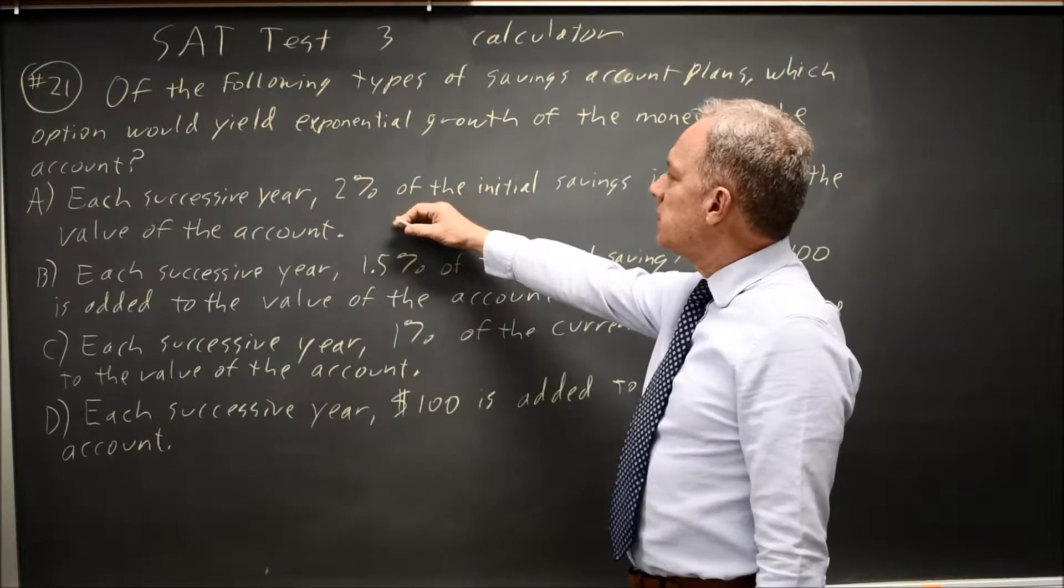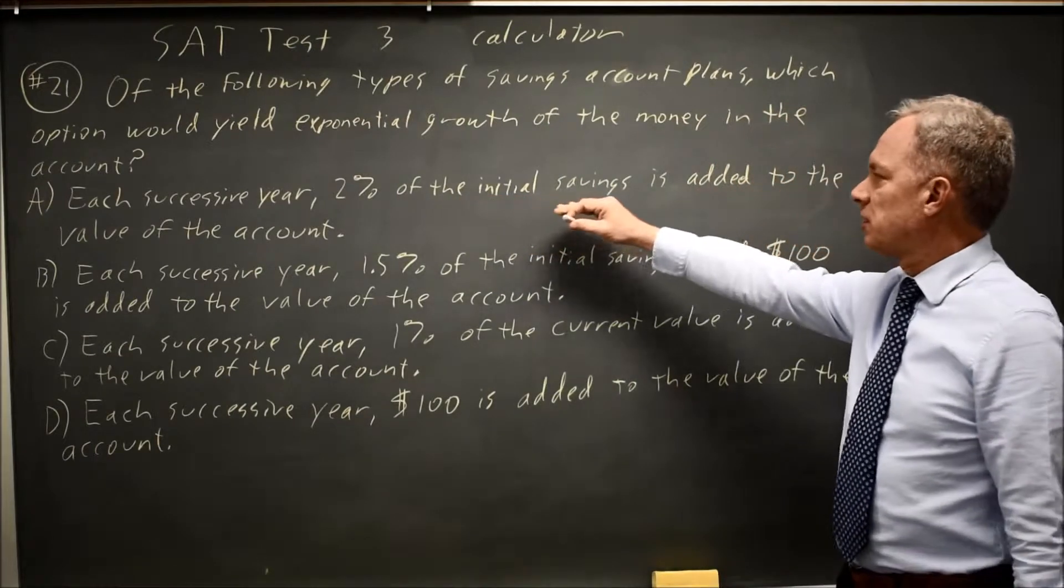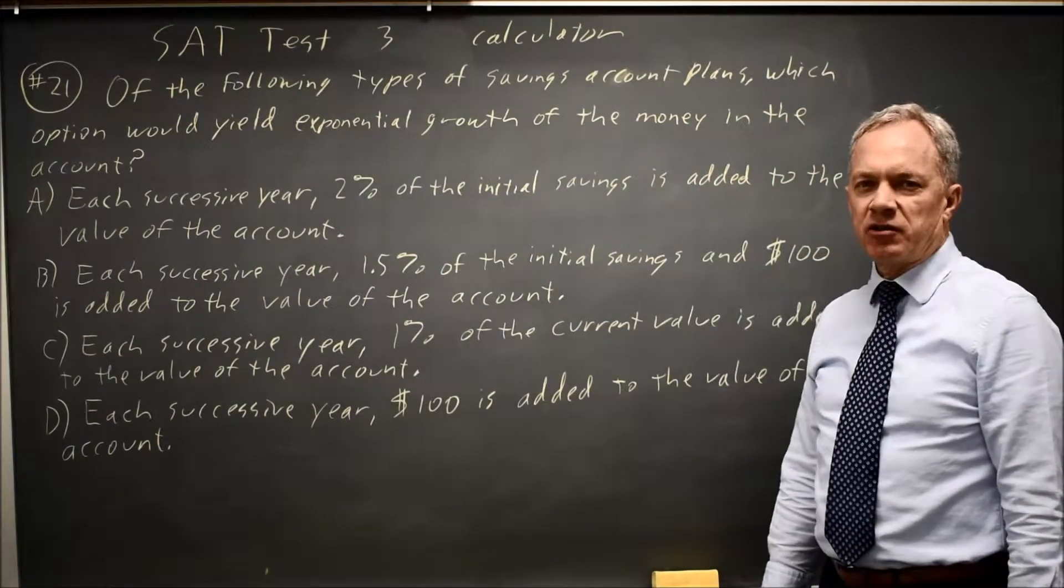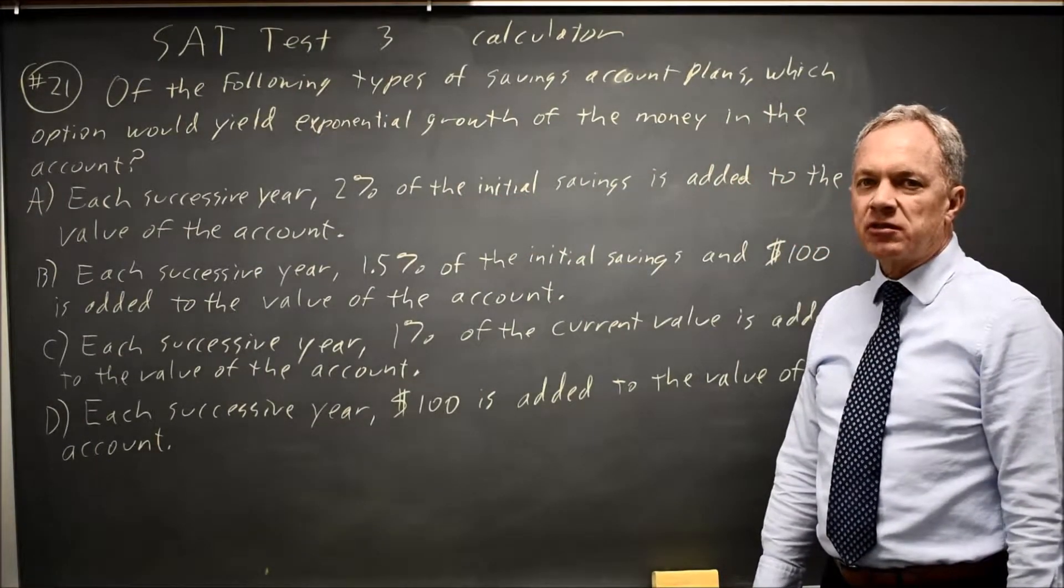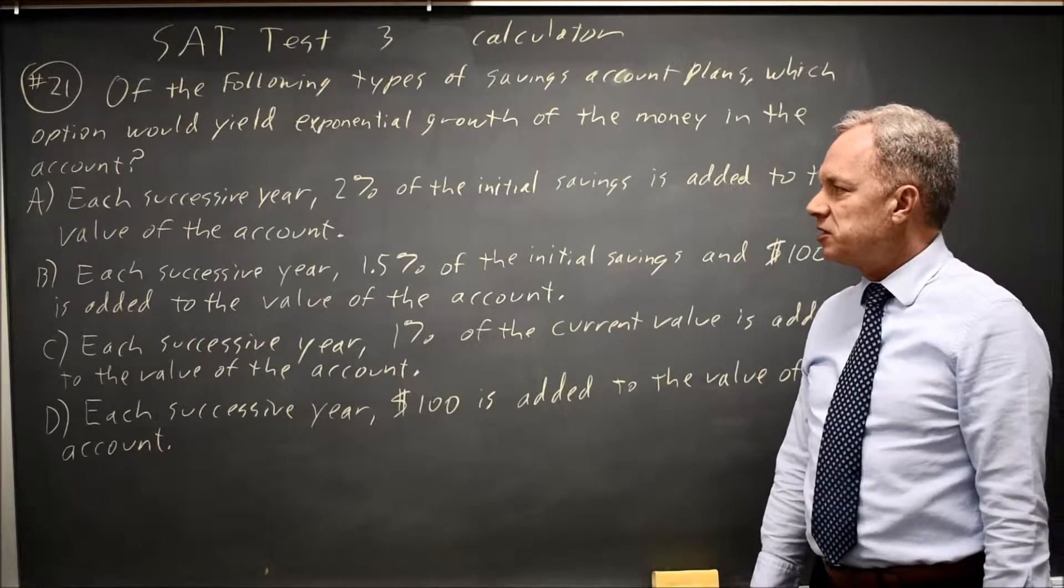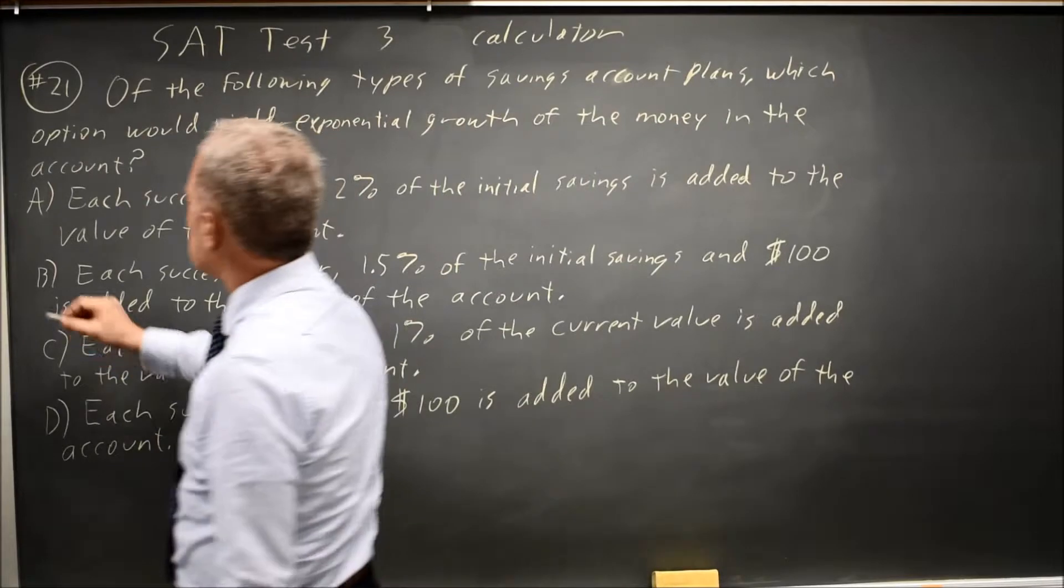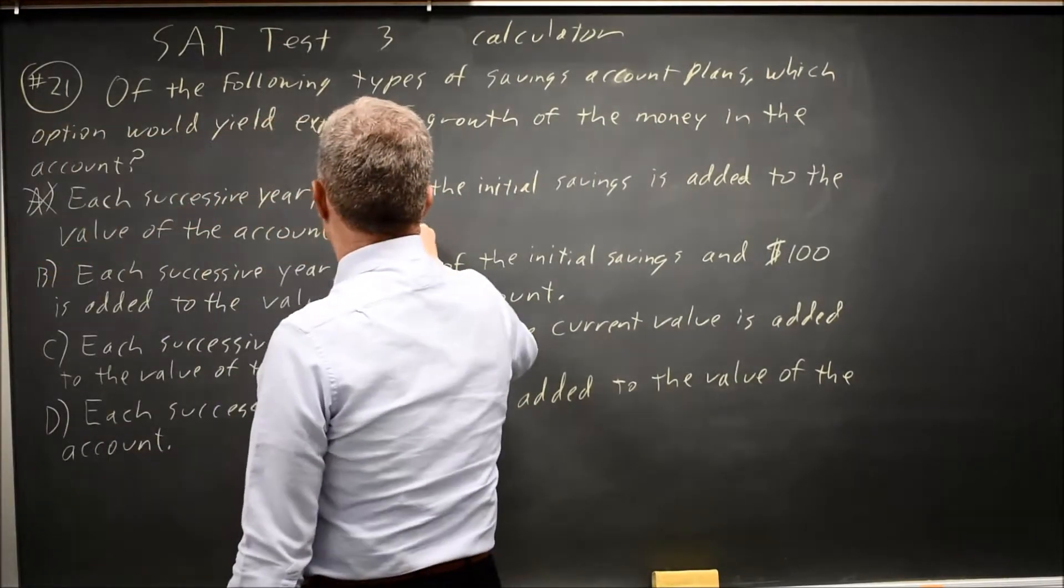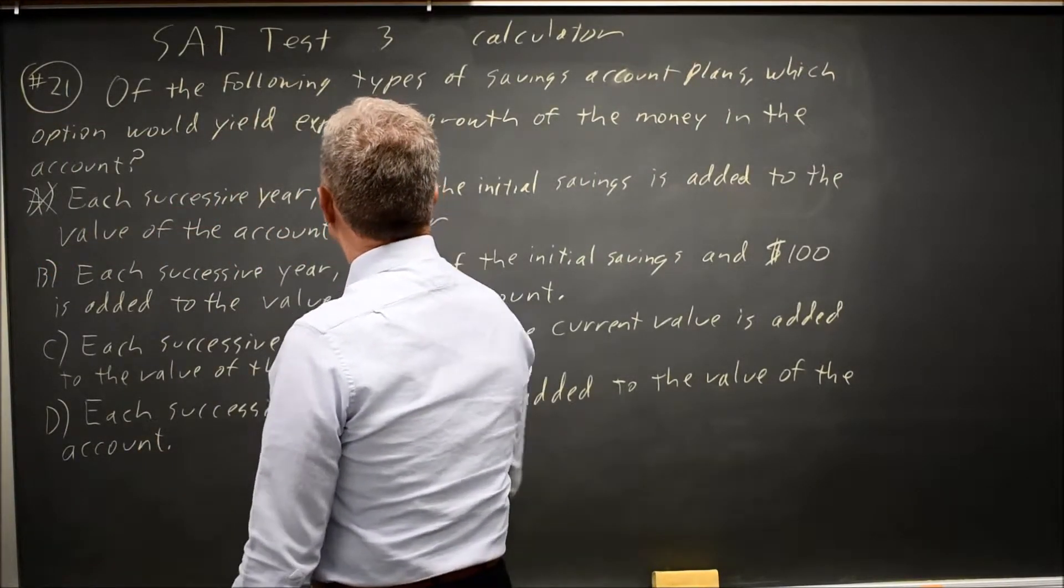So in choice A, each successive year, 2% of the initial savings is added to the value of the account. Since 2% of the initial savings is a fixed amount, we're adding a fixed amount each year. So choice A is linear. They're asking for exponential.